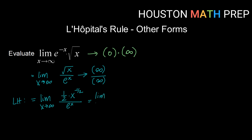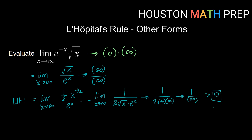Doing a bit of rewriting, this becomes the limit as x goes to infinity of 1 over 2 times square root of x times e to the x. Evaluating, the numerator is 1, and the denominator — 2 times infinity times infinity — behaves like an infinite quantity. So this now becomes 0. Through a little bit of rewriting and an application of L'Hôpital's rule, our original limit is 0.